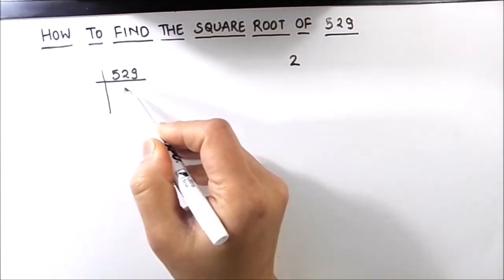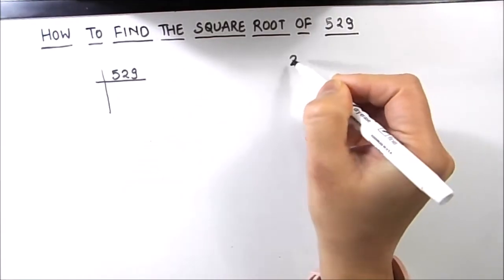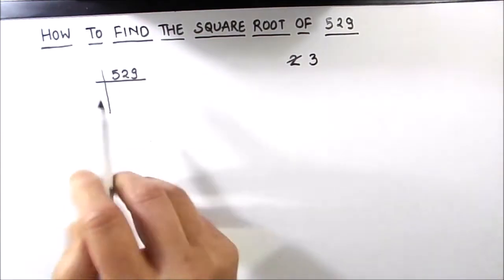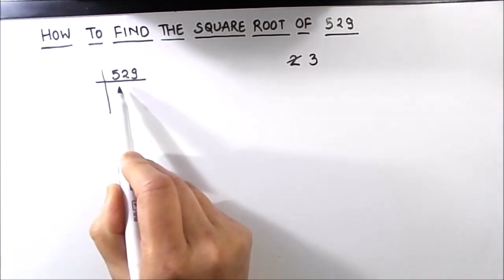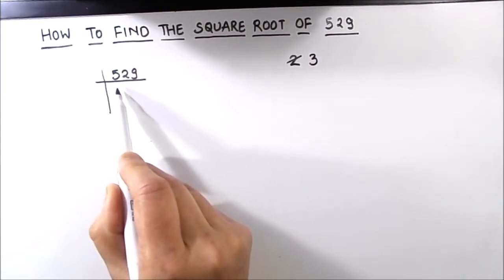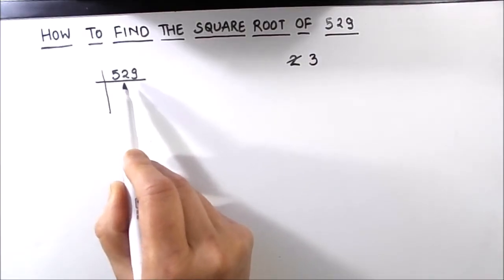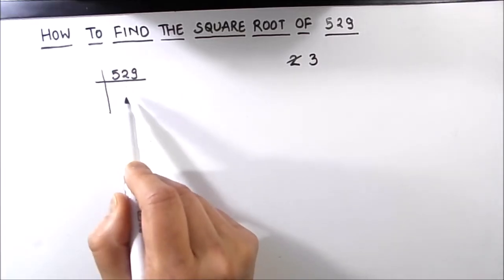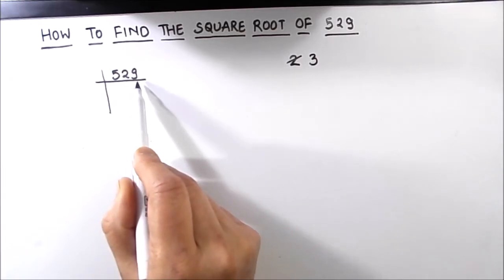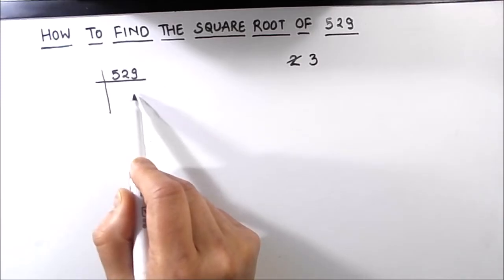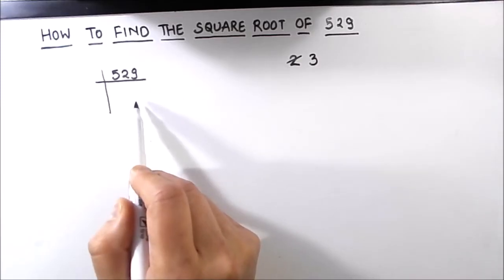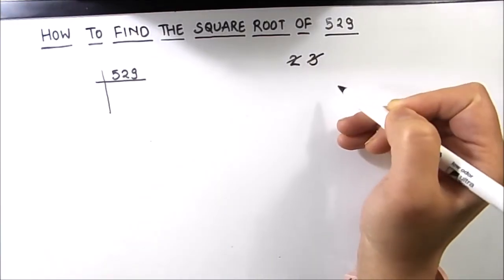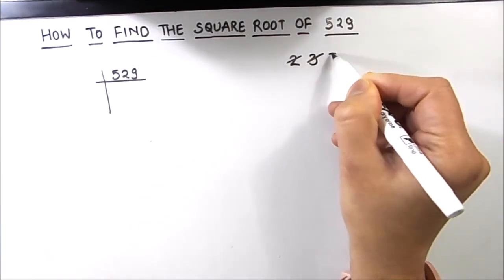We start with prime number 2. Since 529 is an odd number, it is not divisible by 2. Next we try prime number 3. Checking: 3 times 1 is 3, remainder 2; this becomes 22, 3 times 7 is 21, remainder 1; this becomes 19, 3 times 6 is 18, remainder 1. So 529 is not fully divisible by 3, and 3 is also not a factor.